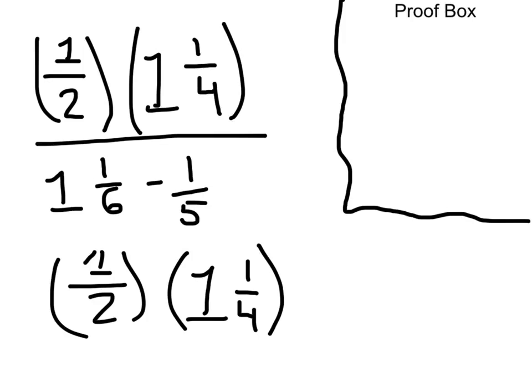It's an extremely complicated task. So in order to multiply this, we're going to need to change this mixed number into an improper fraction. And to do so, let's look at the proof box.